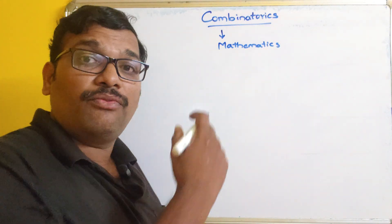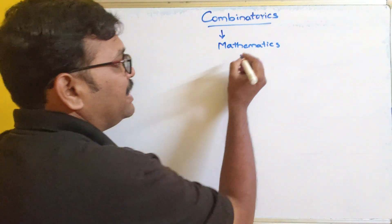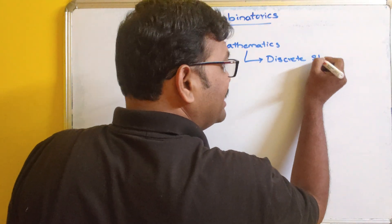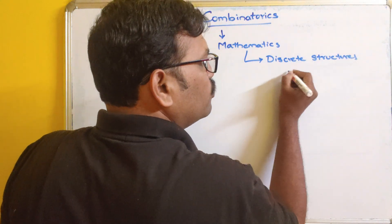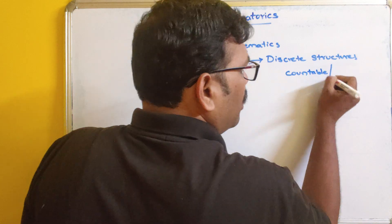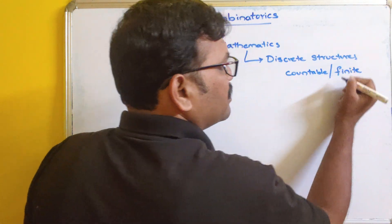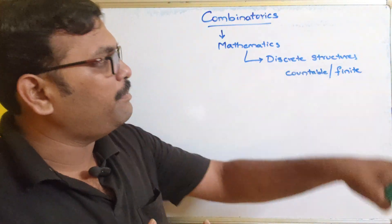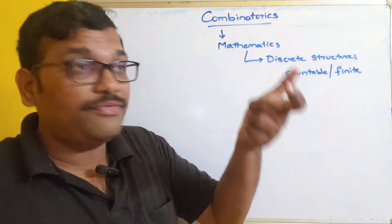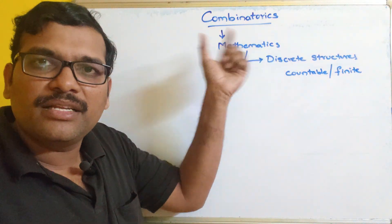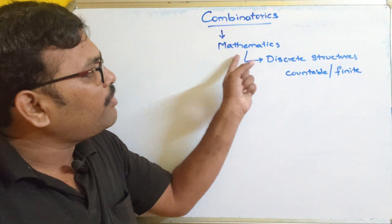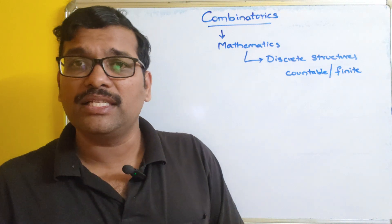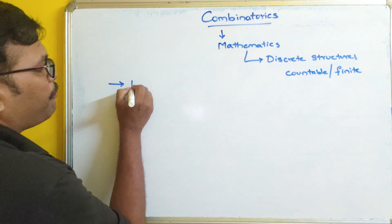We have seen different categories of mathematics. This mathematics deals with discrete structures, which are countable or finite sets or finite elements. The study of finite or countable elements is known as discrete structures, and the study of discrete structures is called discrete mathematics. Combinatorics is one part of this mathematics, and there are mainly three concepts we have to discuss in combinatorics. The first one is the product rule.